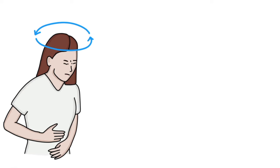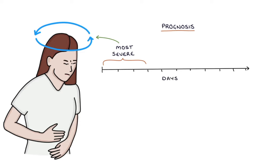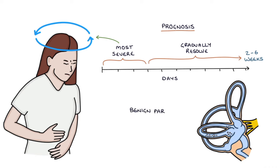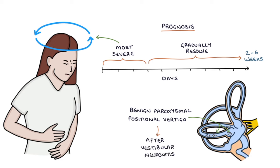Finally, let's talk about prognosis. Symptoms are most severe for the first few days, after which they gradually resolve over the following two to six weeks. Benign paroxysmal positional vertigo, or BPPV, may develop after vestibular neuronitis.